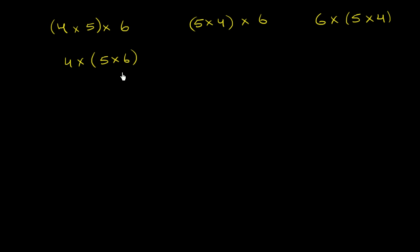When we're talking about which multiplication we do first — whether we do four times five first or five times six first — that's called the associative property. It's kind of a fancy word for a reasonably simple thing. And when we're saying that order doesn't matter — whether we do four times five or five times four — that's called the commutative property. Once again, a fancy word for a very simple thing: it just means it doesn't matter what order you do it in.